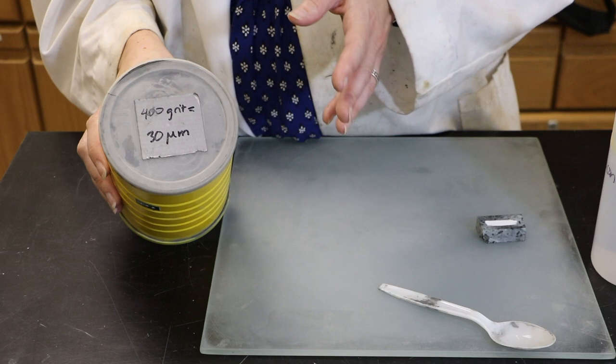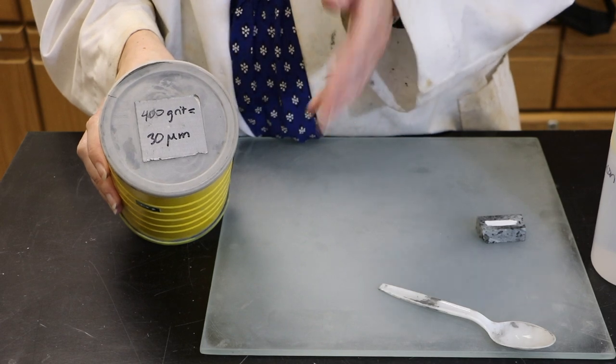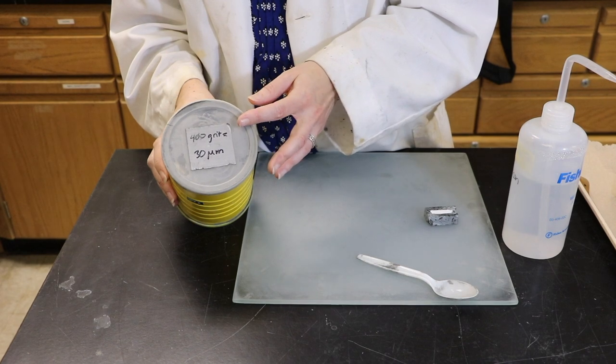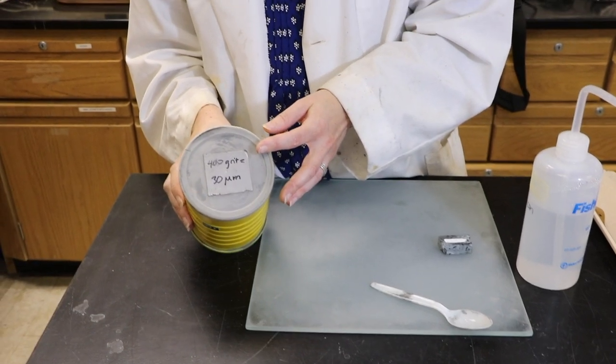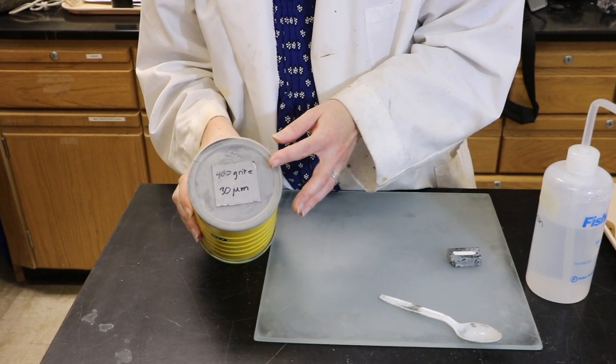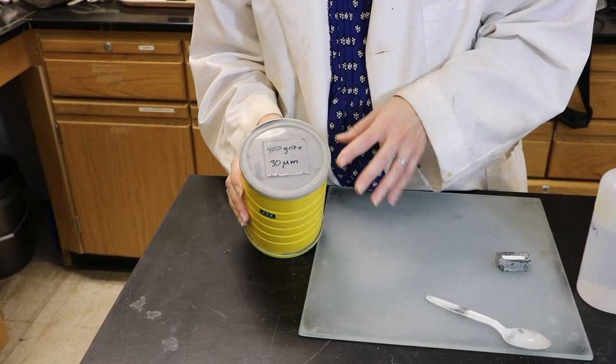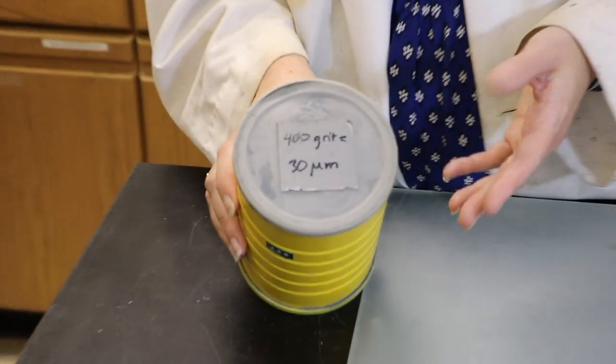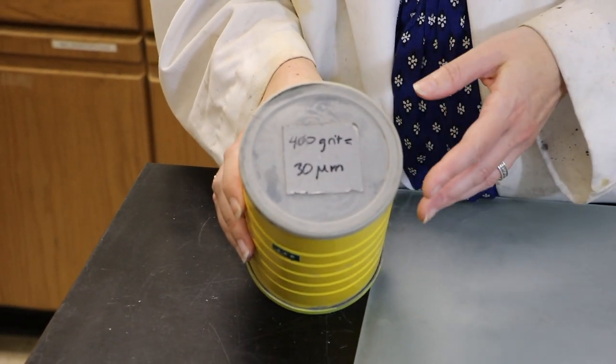With grit size, the numbers actually go in the opposite direction from coarser to finer. This is 400 grit at 30 micron size, whereas 15 micrometers is actually 600 grit. Just keep in mind the size of the particles you're actually using to polish with.